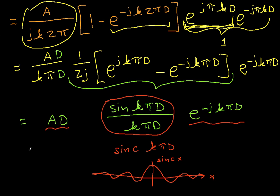So the end result that we have is, this is A D, sinc k pi d, and this is times e to the minus j k pi d.